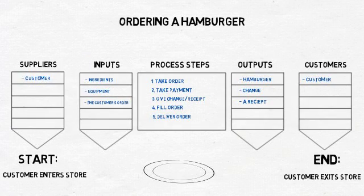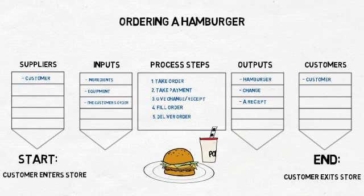A SIPOC clarifies who should be on the team, helps the team agree on project boundaries and scope, identifies suppliers to and customers of the process, and allows all to realize process views are quite similar regardless of the type of hamburger you order at the restaurant.